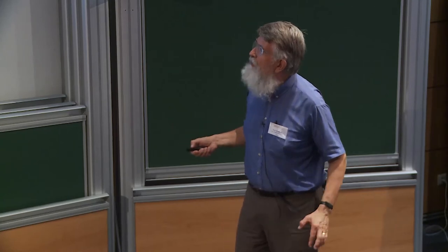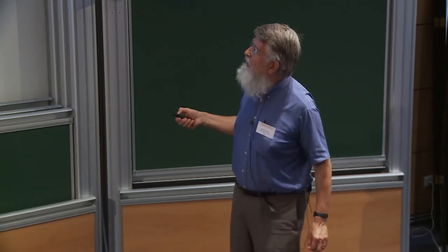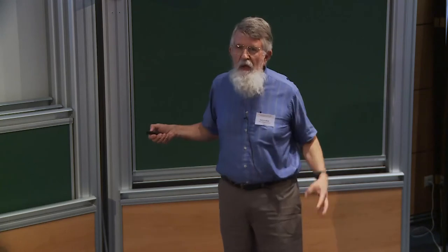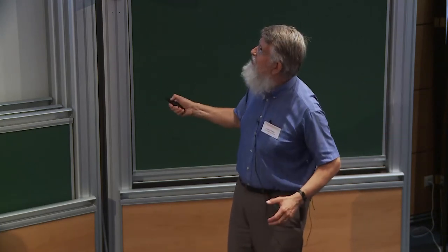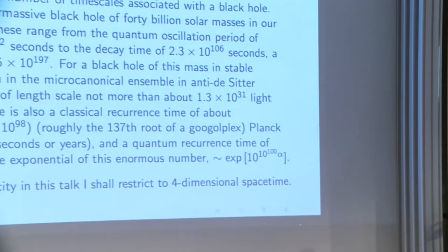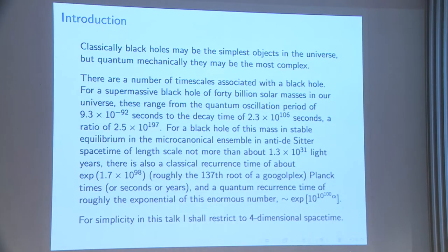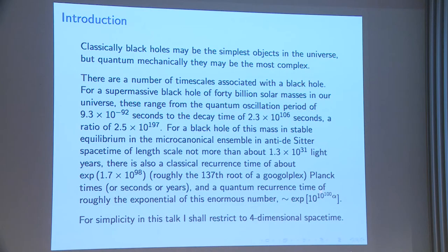There's a ratio of those times. There are also larger time scales. If the black hole is stable in the microcanonical ensemble in an anti-de Sitter spacetime, the box can't be bigger than about 10 to the 31 light years. There's a classical recurrence time — what Jose called the Hilbert time — e to the S, roughly the 37th root of a Googleplex. And then there's a quantum recurrence time, doubly exponential: roughly exponential of 10 to the 10 to the 10 to the 100, times alpha.